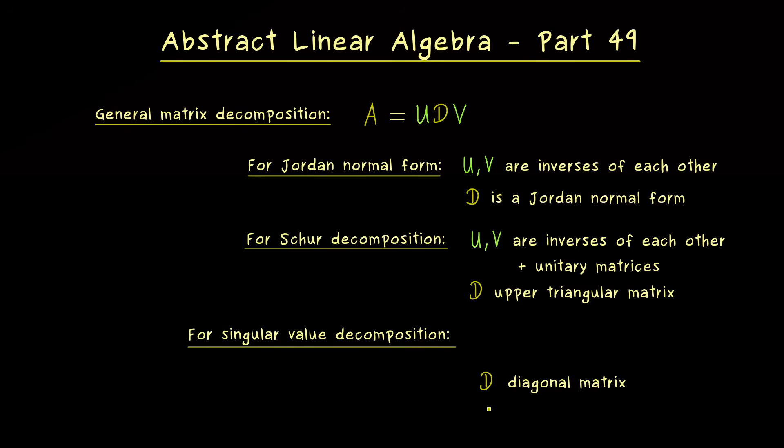And exactly this we definitely want to improve in our singular value decomposition. So we want to enforce that we always have a diagonal matrix D in the middle, which means we have to weaken the connection between U and V. So we have to drop the condition that U and V are inverses of each other. And please note, this immediately means that the singular value decomposition does not give us the fact that A and D are similar matrices. However, we still want that U and V are invertible matrices, which means that A and D are definitely equivalent matrices.